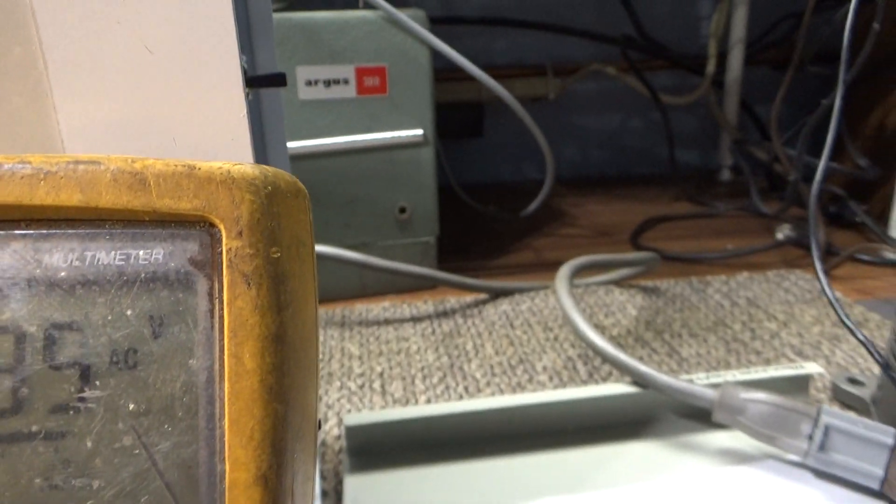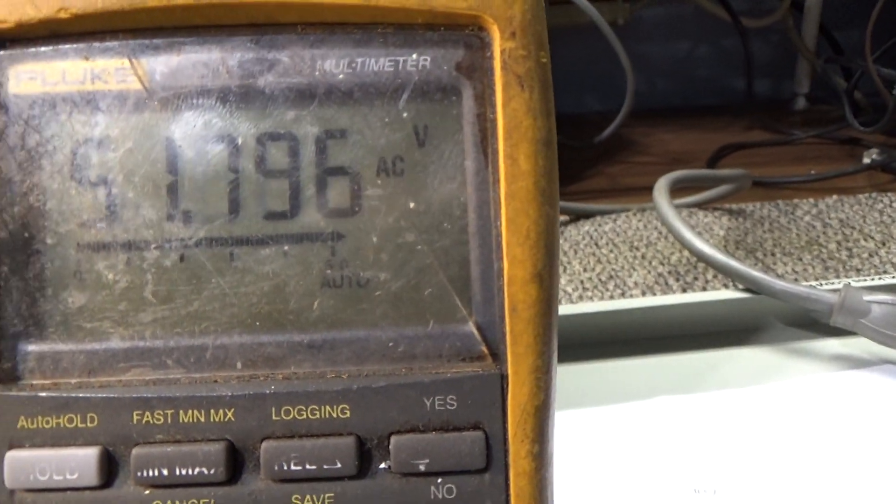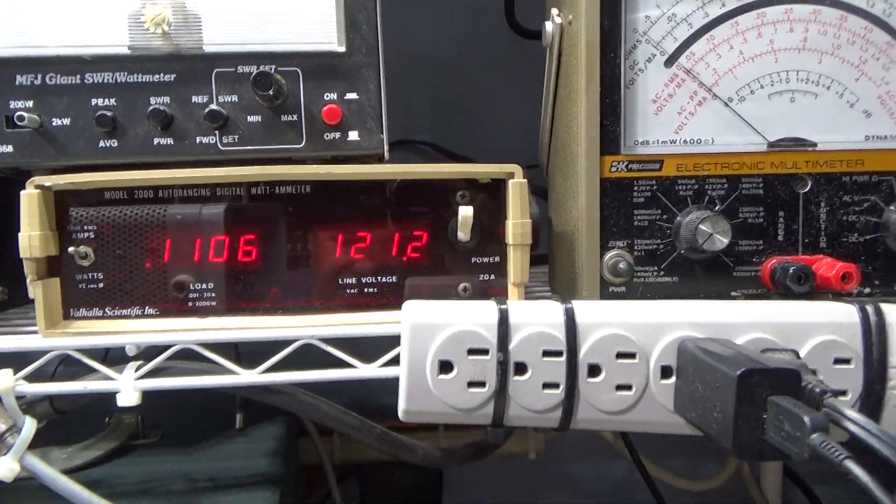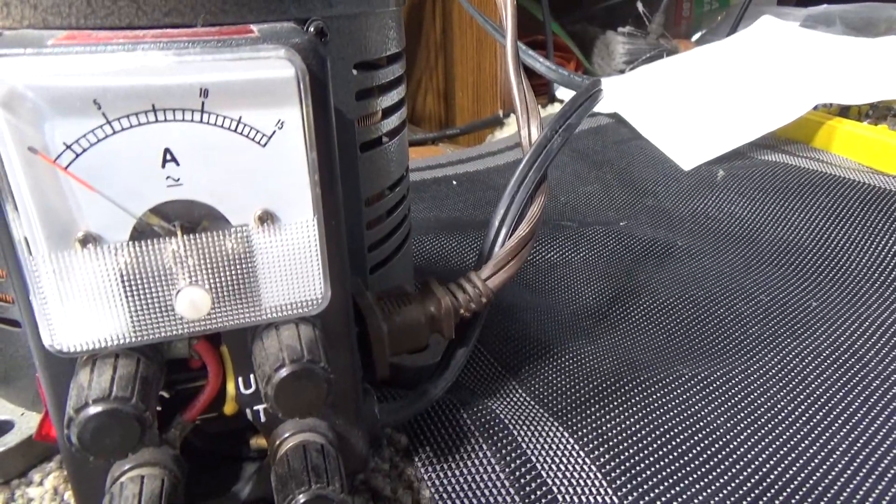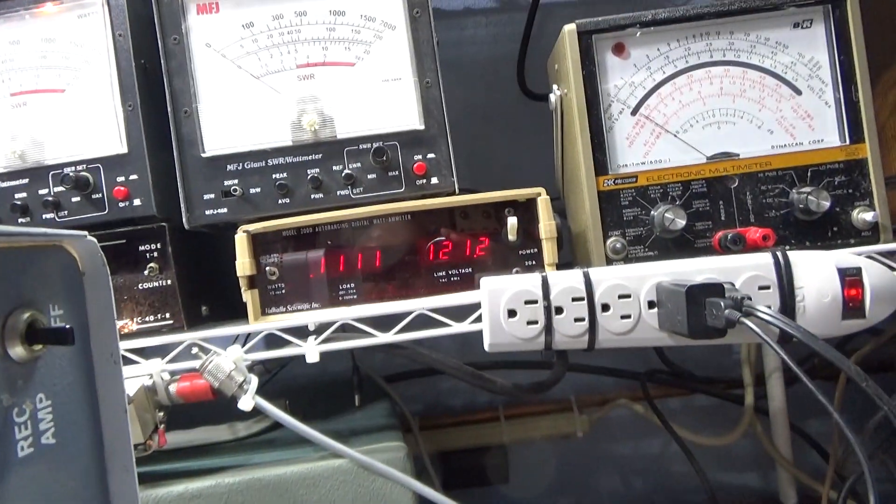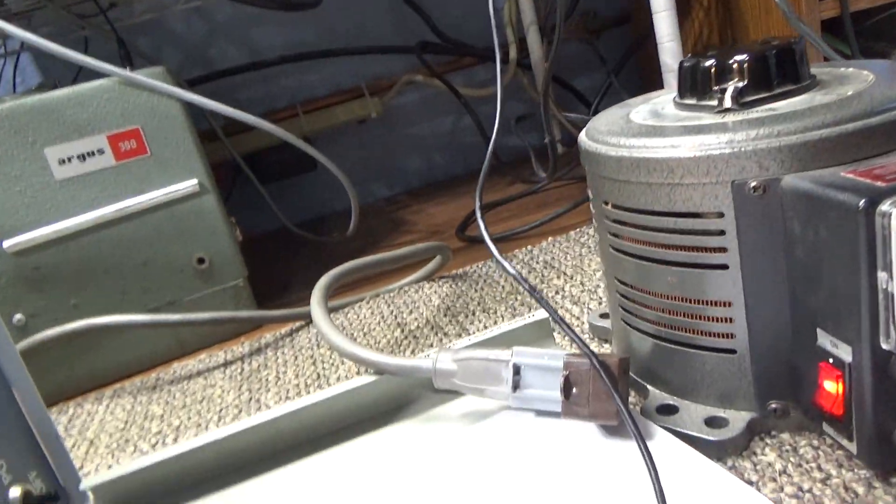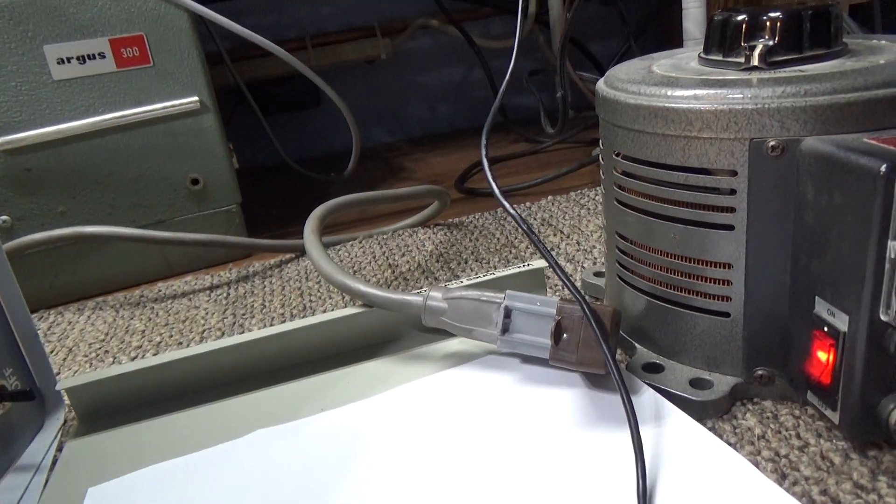Over here, 0.1 amps on that one, and this one is very barely moving. That's why I like the digital—I can get a better picture. It's not pulling high amps and the voltage is coming out right, so I have them wired correctly in the correct phase.